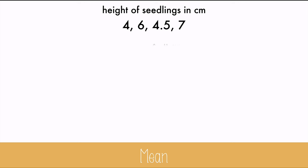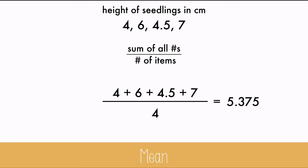To find the mean, you take the sum of all the numbers and divide by the number of items in the collection. So you'll add up 4, 6, 4.5, and 7, and divide by 4 because there were 4 numbers. And you get 5.375.